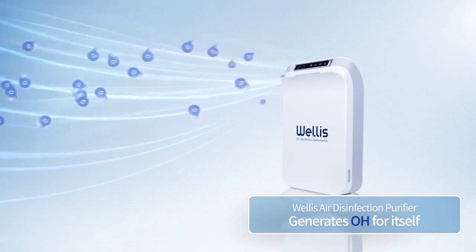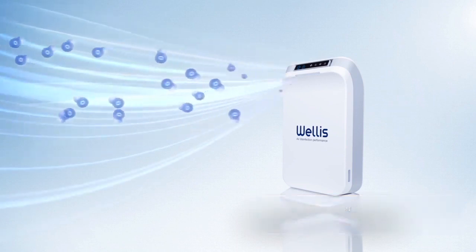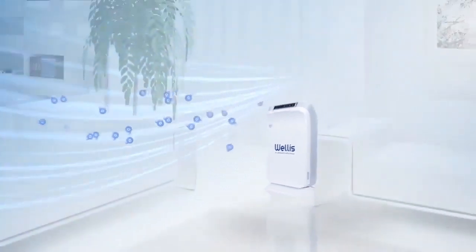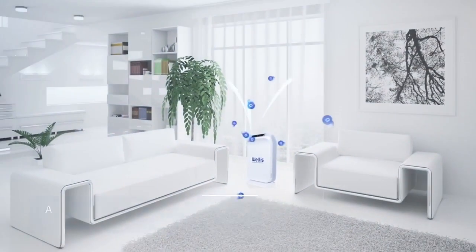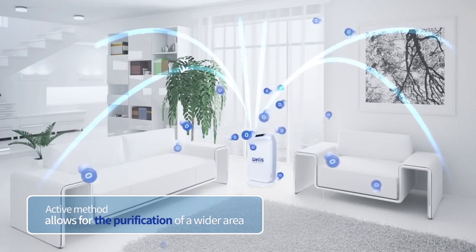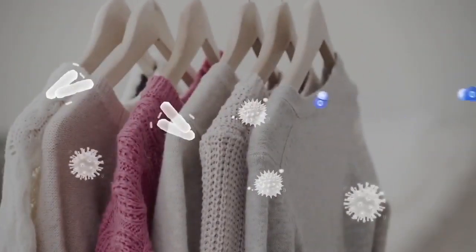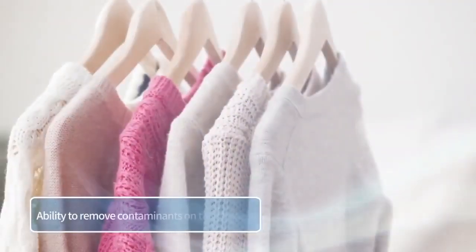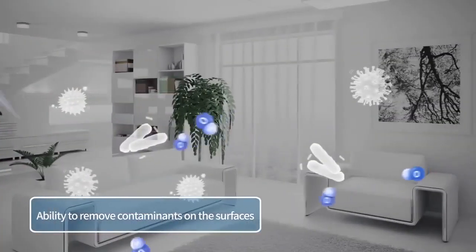In addition, the Wellis air disinfection purifier has an active method which disperses the OH omnidirectionally. This enables the unit to purify not only air but also the surfaces of clothing and furniture.